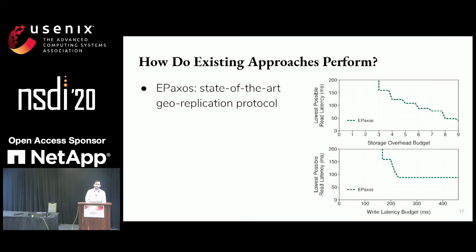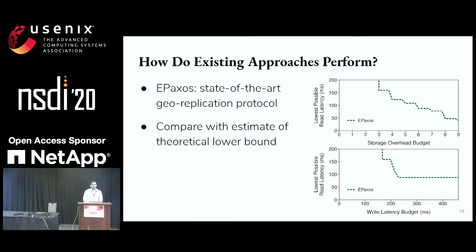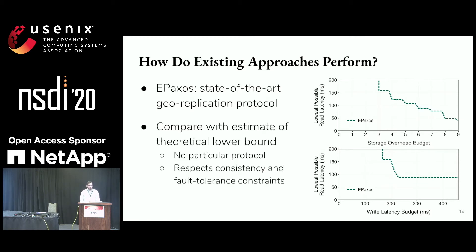The step pattern has to do with the fact that we can only store data at data centers — when we move from using one data center to another, that's when we see an improvement. But just by looking at this, we can't gauge how good this is. So we compare it with an estimate of a theoretical lower bound, not bound by any particular protocol.